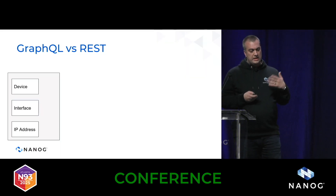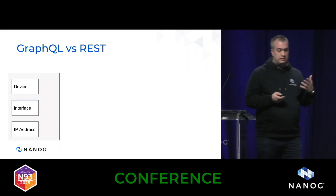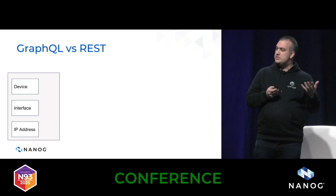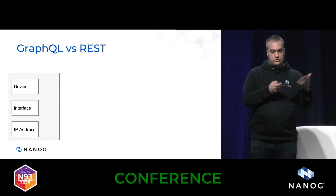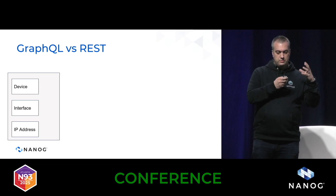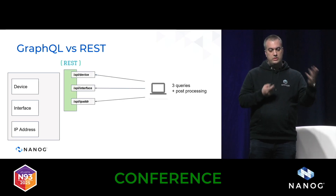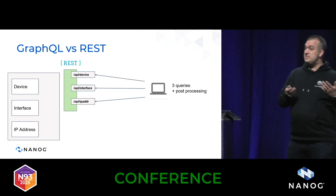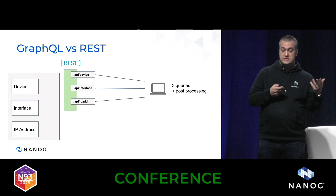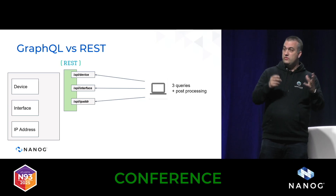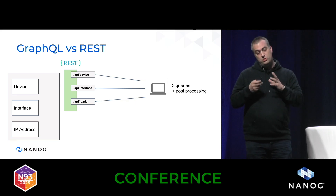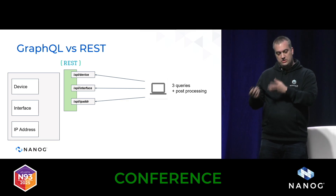Compared to REST, previously if I wanted to access the same information I would typically need one query to access the device, one query to access the interface, one query to access the IP address — three separate queries from the client perspective. And then I'd need to process and combine all of that data on the client side to actually make use of it, so there was a lot more processing on the client side.